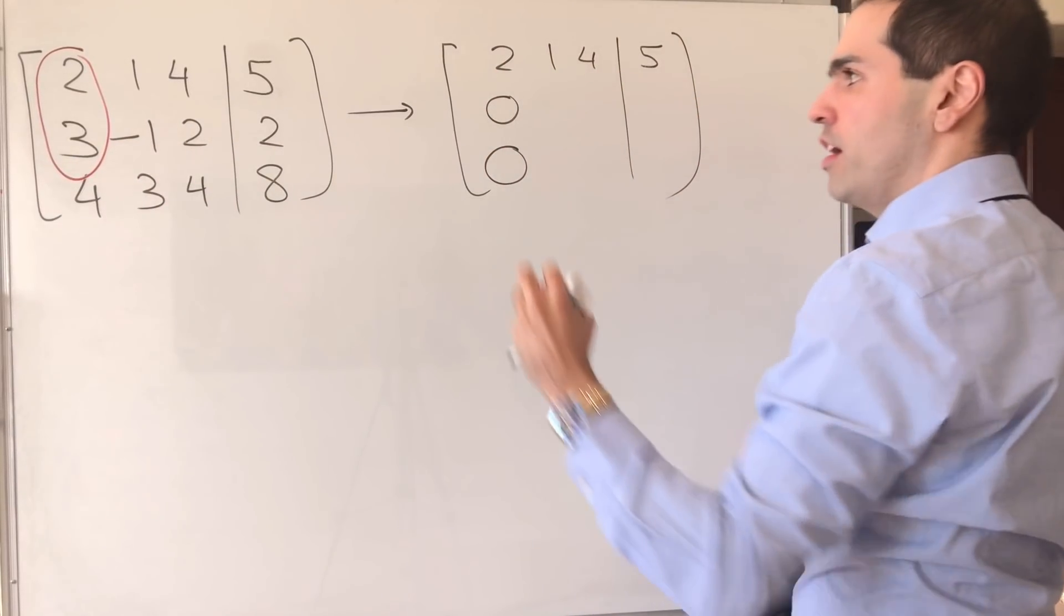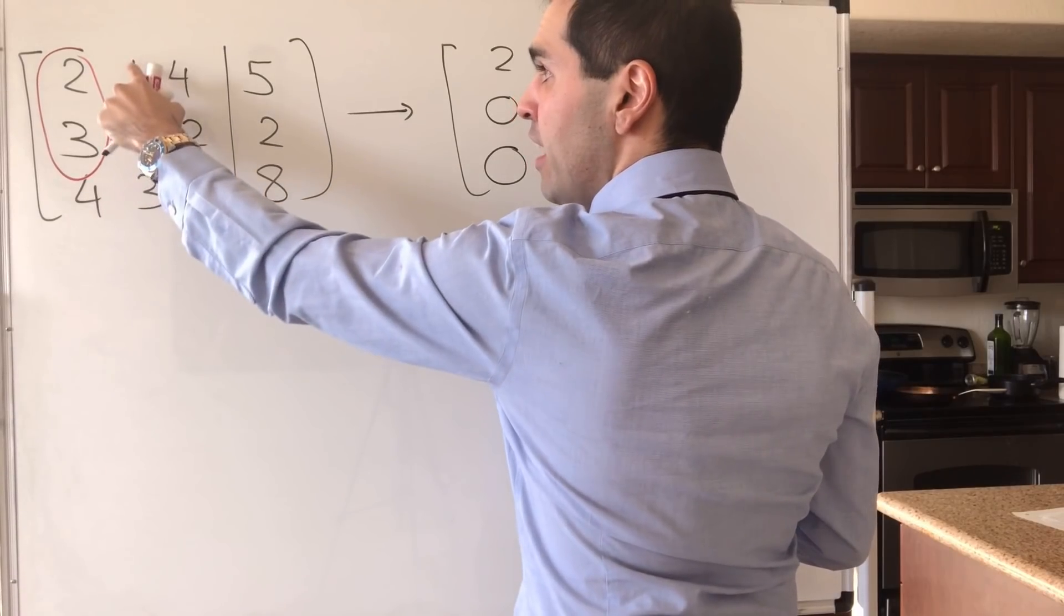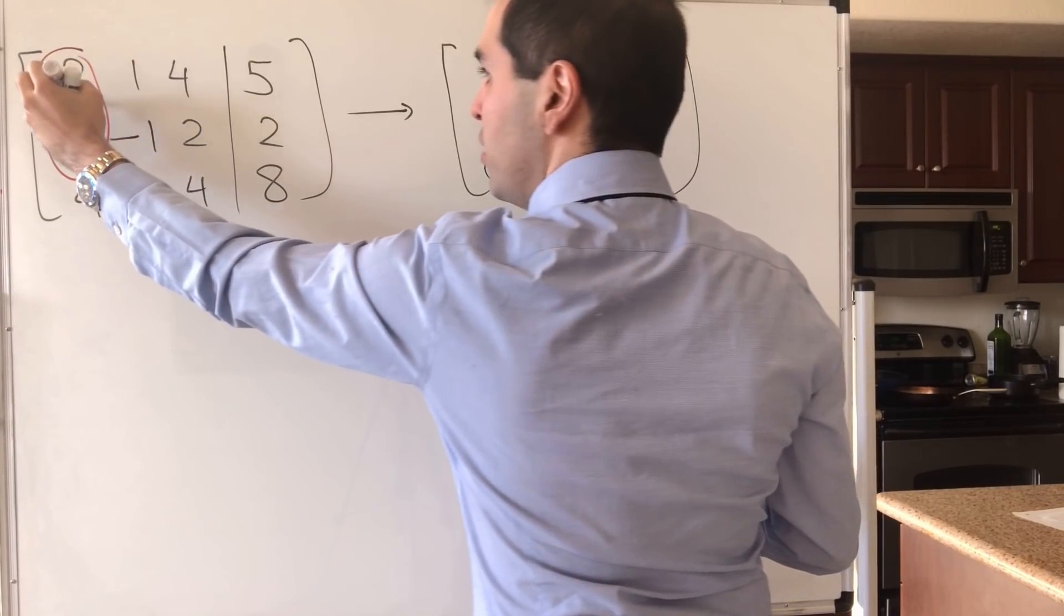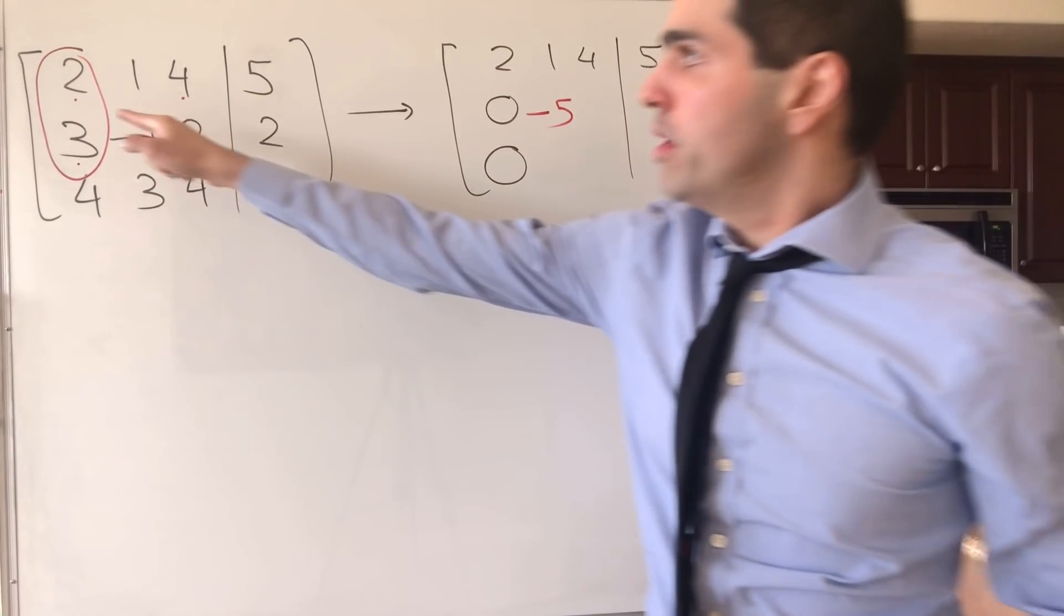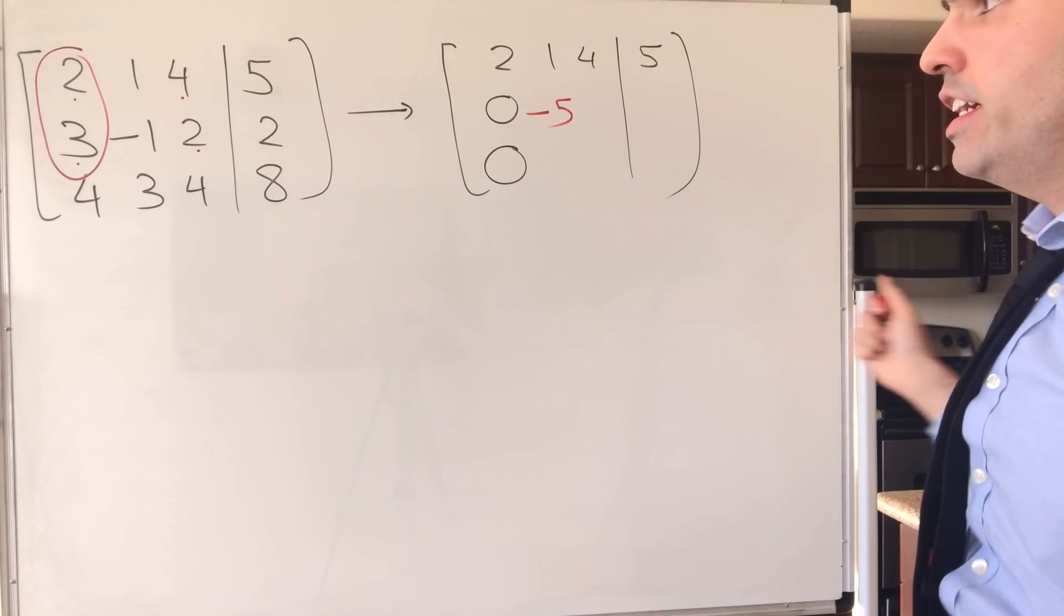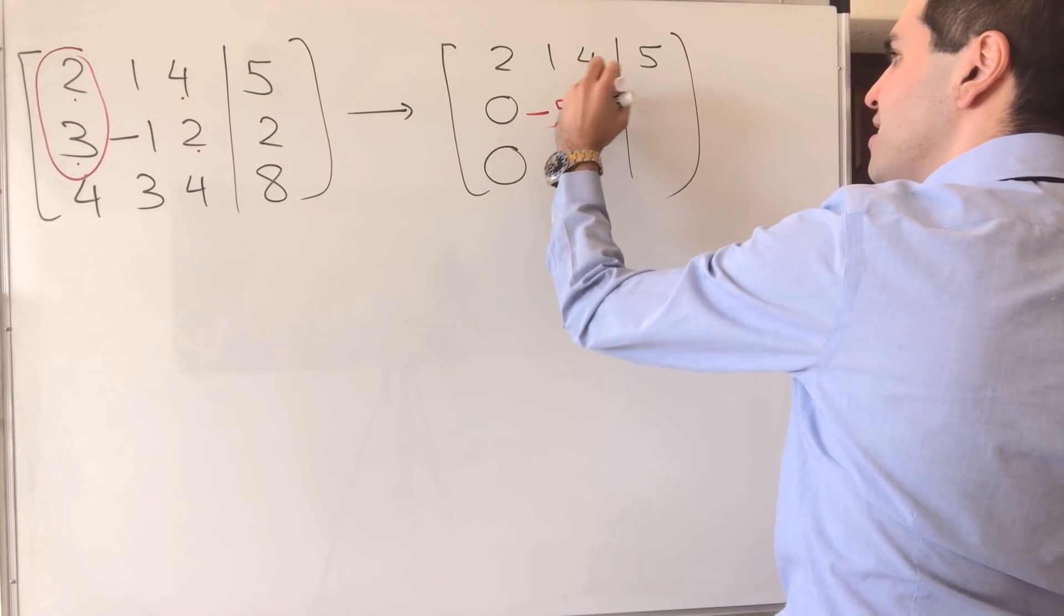And then you ignore the second column and take the determinant of 2, 4, 3, 2. Because again, you keep the 2, 3, and that becomes 4 minus 12, and that's minus 8.